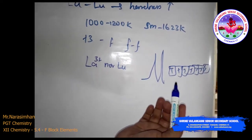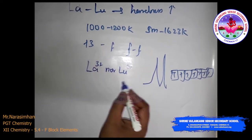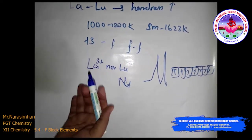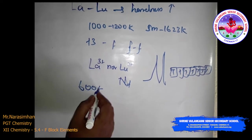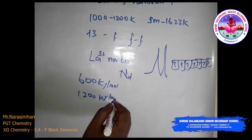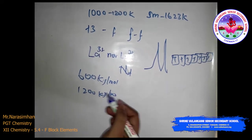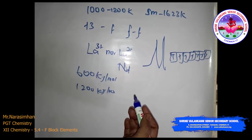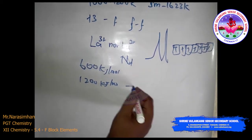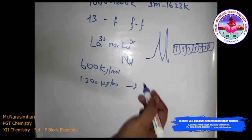Paramagnetism rises to a maximum in neodymium (Nd). The first ionization enthalpy of lanthanoids is around 600 kJ/mol, and the second ionization enthalpy is around 1200 kJ/mol, comparable with those of calcium. Detailed discussion of the variation in the third ionization enthalpy indicates exchange enthalpy considerations — the extra stability of empty, half-filled, or completely filled F orbitals. Abnormally low values of the third ionization enthalpy are shown by lanthanum, gadolinium, and lutetium.